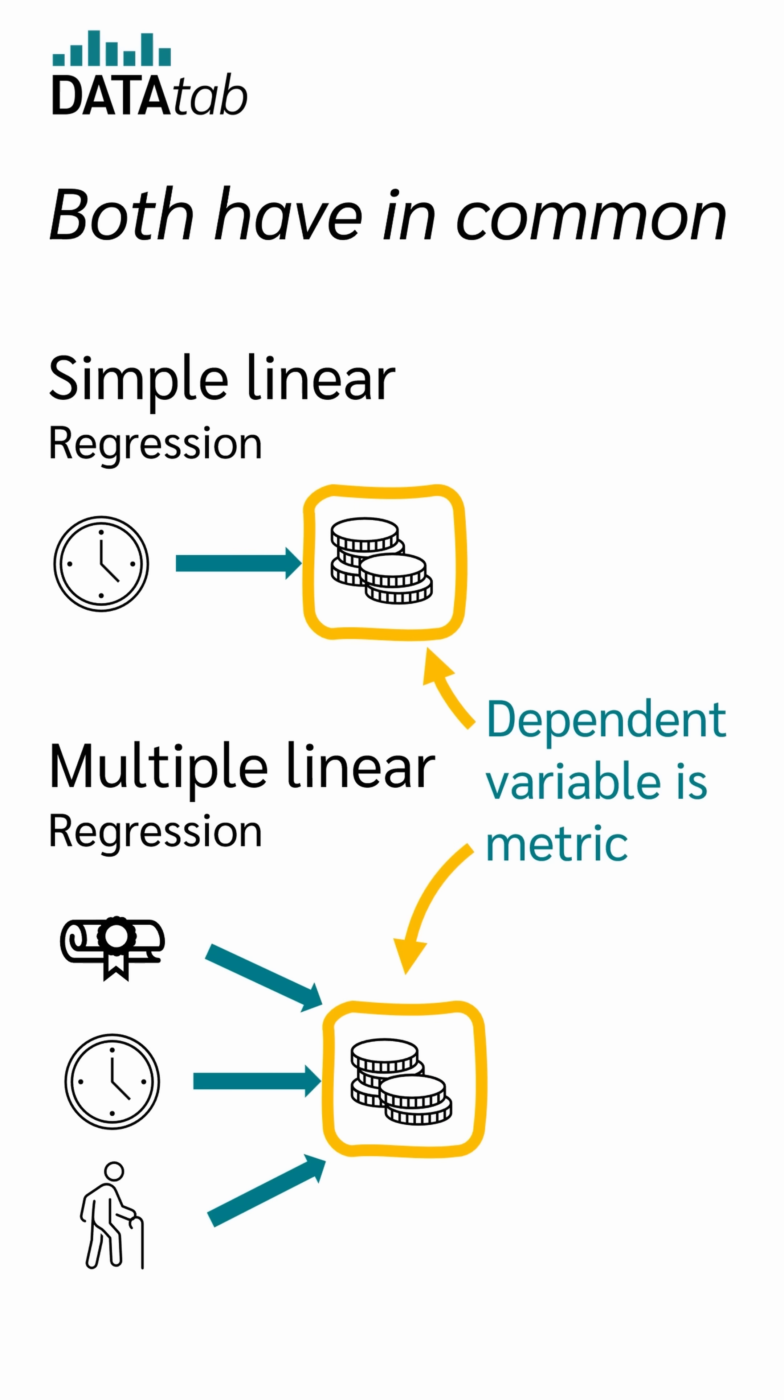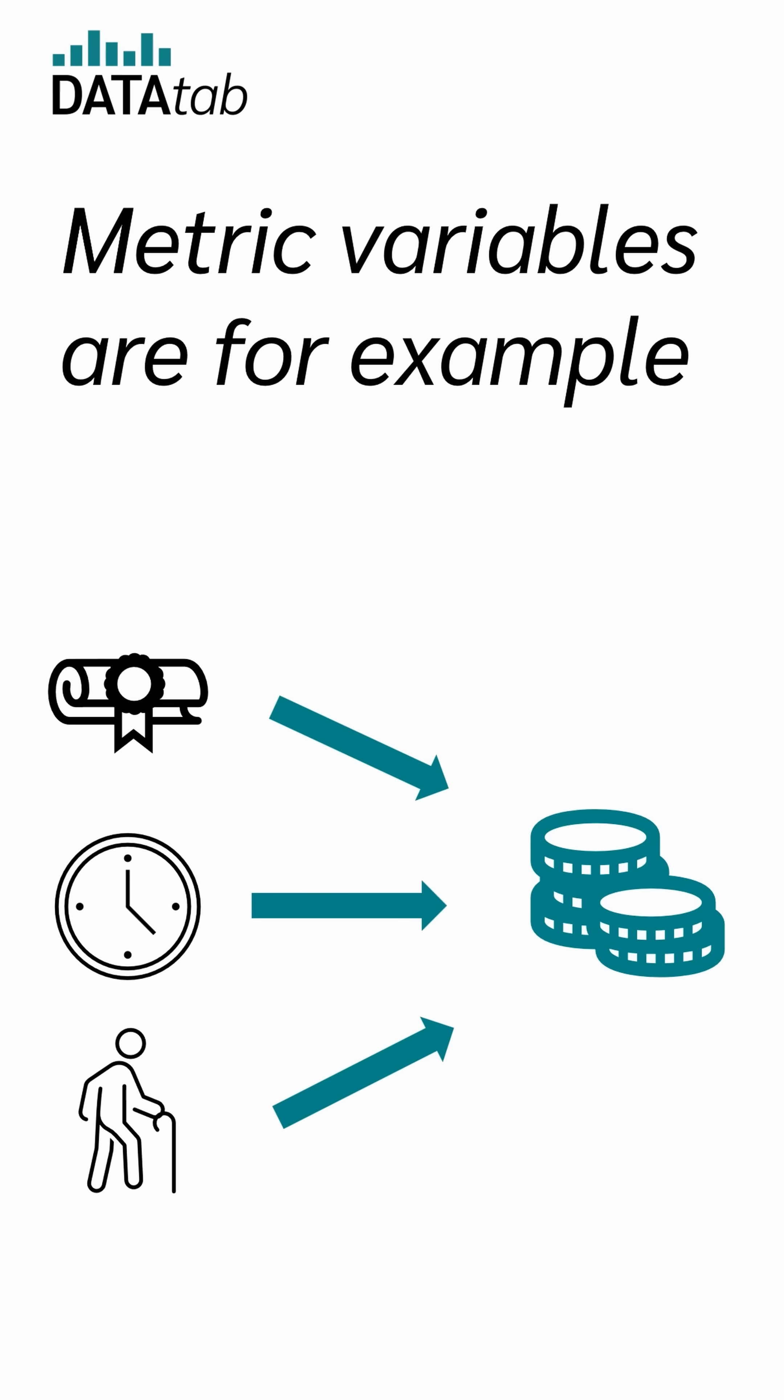Both have in common that the dependent variable is metric. Metric variables are, for example, the salary of a person, the body size, or the electricity consumption.